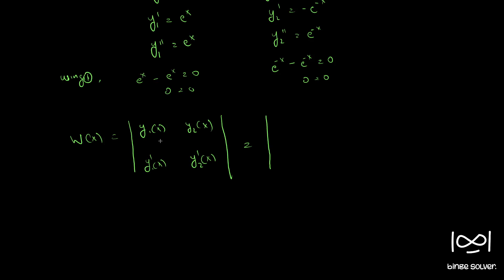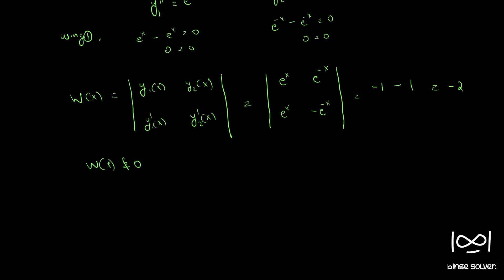So here the Wronskian is computed with e raised to x, e raised to minus x, e raised to x, and minus e raised to minus x. It gives minus 1 minus 1, that is equal to minus 2. So the Wronskian is a constant and is not equal to 0 for any x in any interval, from minus infinity to infinity.